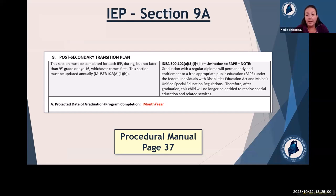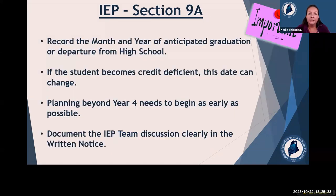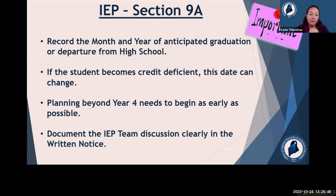Section 9A of the IEP is the very first part of the secondary transition plan, where you put the projected date of graduation or program completion — just the month and year. This is the anticipated graduation or departure from high school, and this date can change. Planning beyond the four years needs to begin as early as possible. If you think a student will be staying beyond four years, start that planning as soon as you can and document that discussion in the written notice.